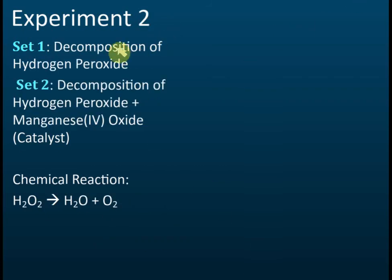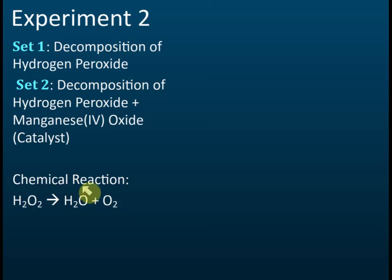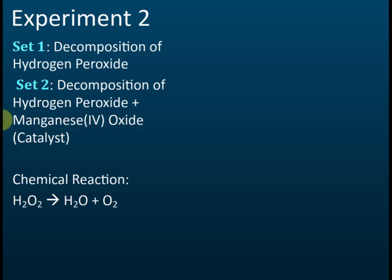Experiment two is the decomposition of hydrogen peroxide. The formula for hydrogen peroxide is H₂O₂. Hydrogen peroxide is not stable, so by itself it will slowly decompose to form water and oxygen. In the second set, we add manganese(IV) oxide — formula MnO₂, also called manganese dioxide — as a catalyst.